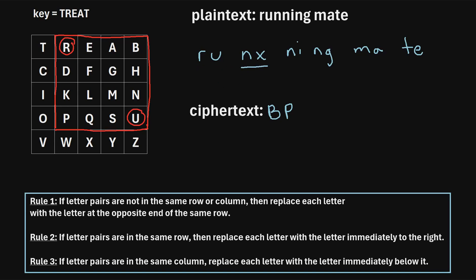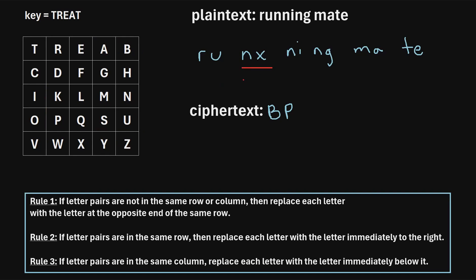Next, we find N and X within the table and draw a rectangle using them as corners. N and X are not in the same row or column, so we use rule one again. N is replaced with the letter at the opposite end of its row, which is L. Then X is replaced with the letter at the opposite end of its row, which is Z. So the next ciphertext letters are L, Z.